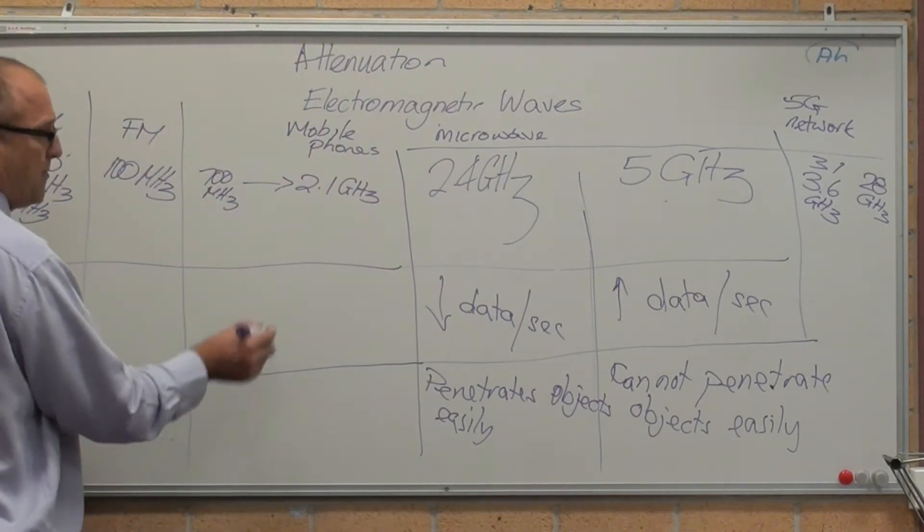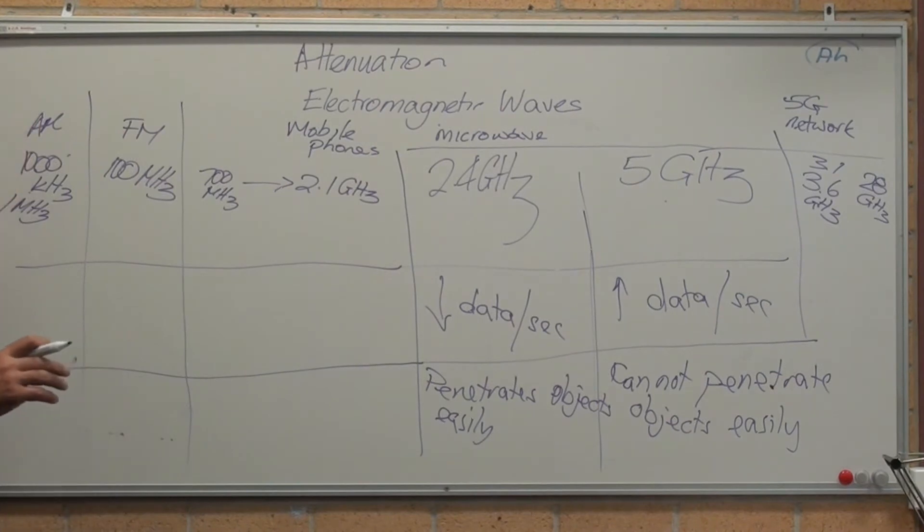So, of course, mobile phones carry data. FM does carry data, but not a lot. AM carries less.